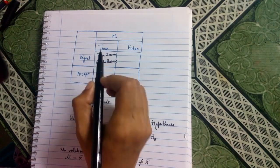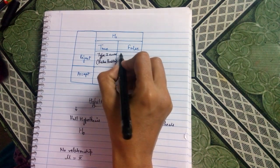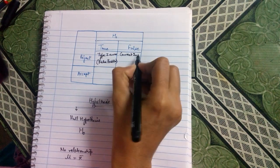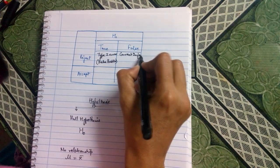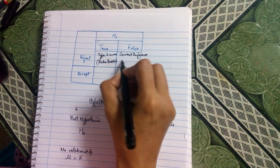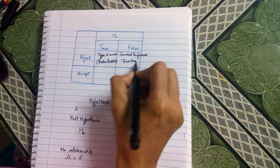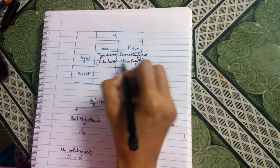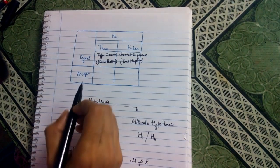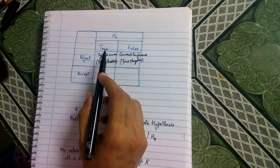If null hypothesis is false and we are rejecting it, that means we are making the correct decision — so it is a correct inference, or we could say true negative. True negative is the other term used for this correct inference.